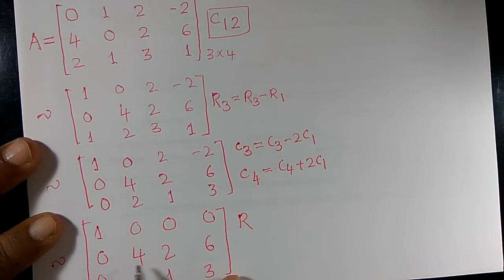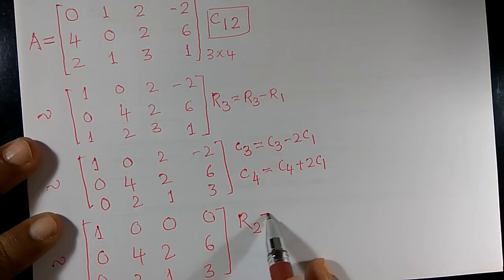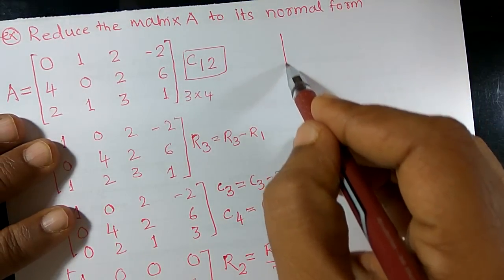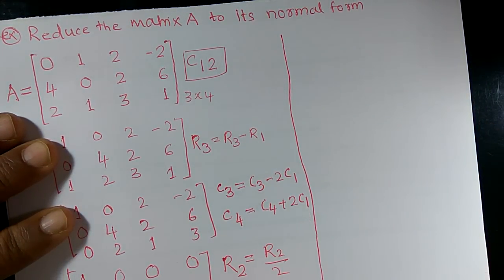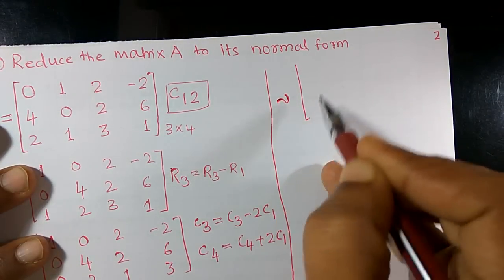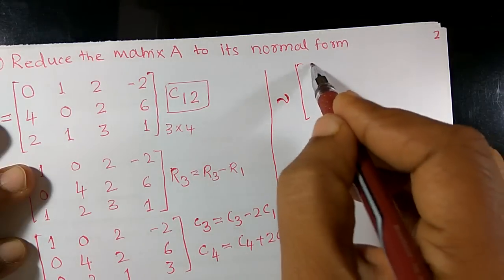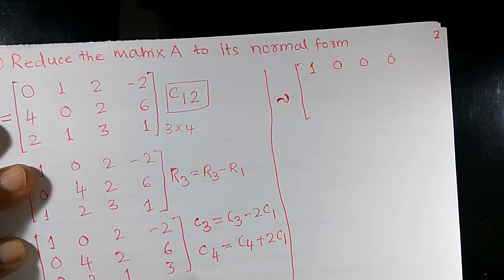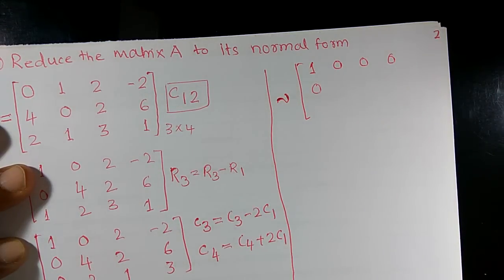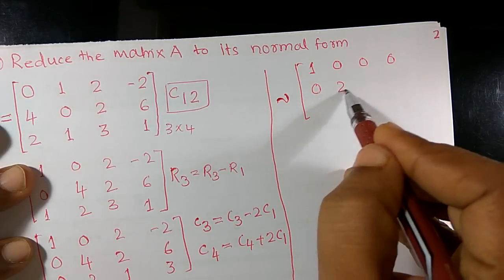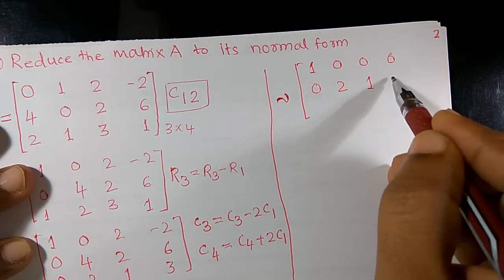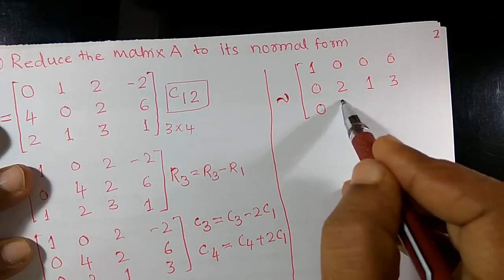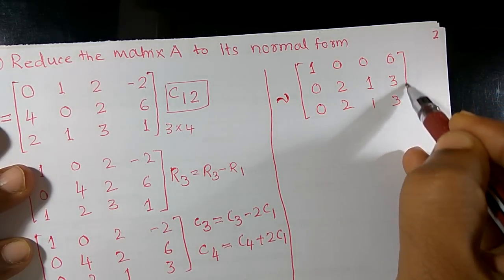Now I want to apply R2 = R2 ÷ 2 to obtain a new equivalent matrix. The first row remains the same: [1, 0, 0, 0]. Dividing the second row by 2: 0÷2=0, 4÷2=2, 2÷2=1, 6÷2=3. The last row remains as it is: [0, 2, 1, 3].